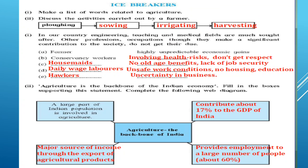One example is the farmer — they have highly unpredictable economic gains. As I said, farmers need to work 24 by 7. They can't give excuses about rain, sun, or cold. Whatever the weather, a farmer needs to go and perform activities on the farm every single day. I have made a few examples clear for you. You can go through these examples.